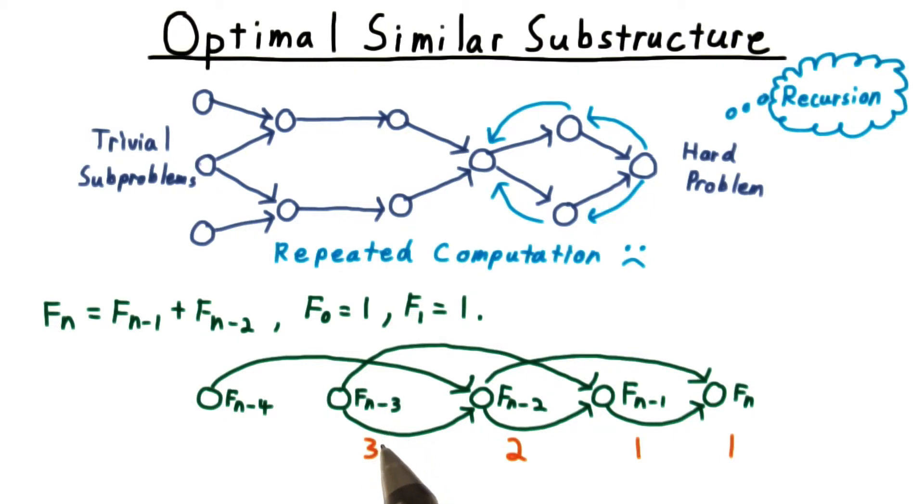Similarly, n minus 3 needs to be called once for every time that the subproblems that depend on it are called: twice for F sub n minus 2 and once for F sub n minus 1, for a total of 3. F sub n minus 4 gets computed once for each time that F sub n minus 3 is called and once for each time that F sub n minus 2 is called, for a total of 5.